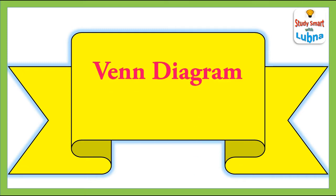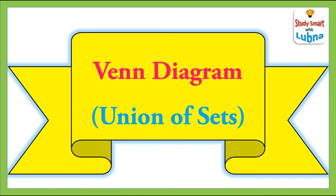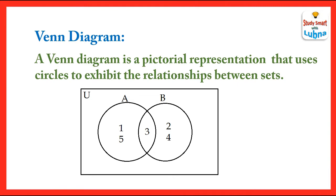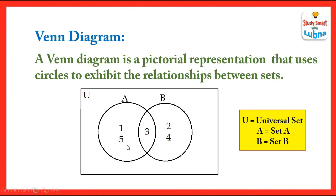Welcome students, today we are going to learn about the Venn diagram of union of sets. First of all, we should know what a Venn diagram is. A Venn diagram is a pictorial representation that uses circles to exhibit the relationships between sets. Here this rectangle is representing the universal set, and these two circles are representing set A and set B. Inside set A and set B, the numbers written are the elements of set A and B.